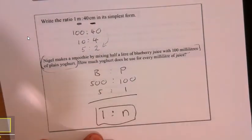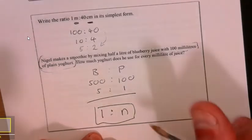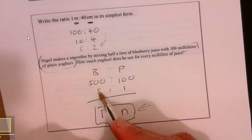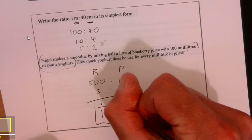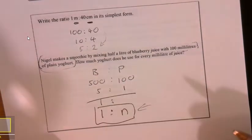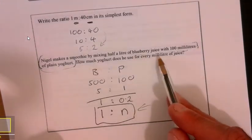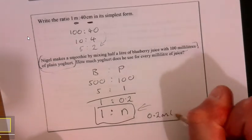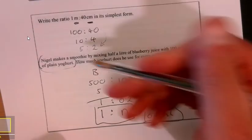What that wants is it wants me to write it like one to something. You quite often get this in questions. All you've got to do is: what have I got to do to that five? Do the same to that. Divide by five. So if I divide that by five it's one, divide that by five it's 0.2. The answer to my question is he's going to use 0.2 milliliters of yogurt for every milliliter of juice.